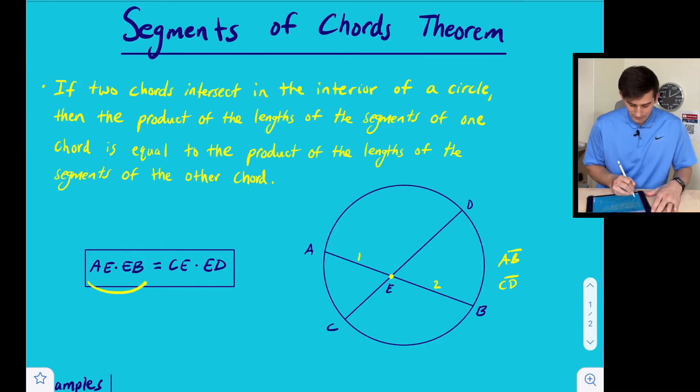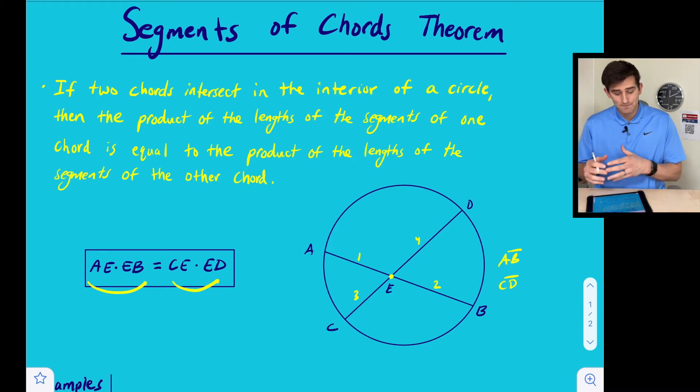So that's where we have AE times EB, and that is going to be equal to the segment CE and segment ED. We'll multiply those two together as well. So here we have AE times EB is going to be equal to CE times ED.